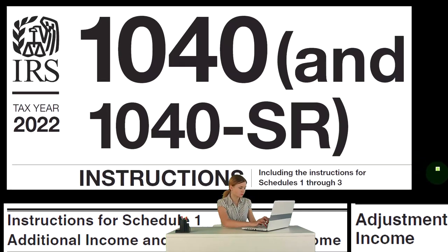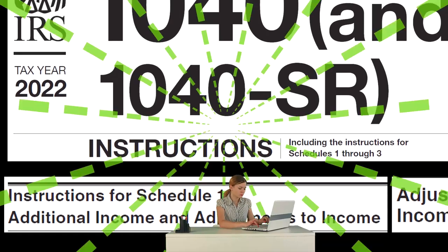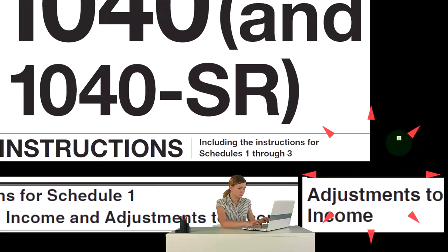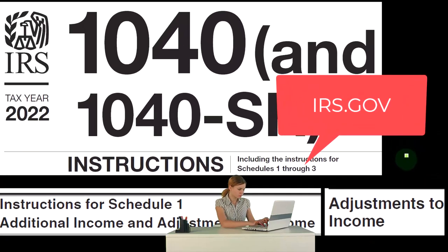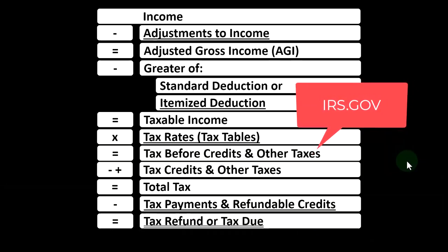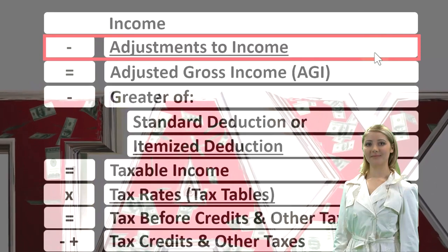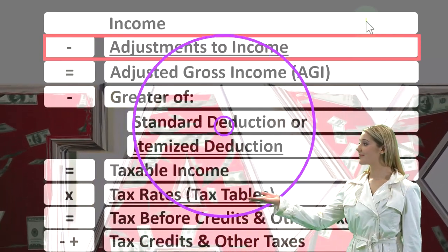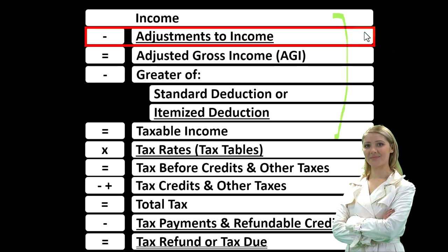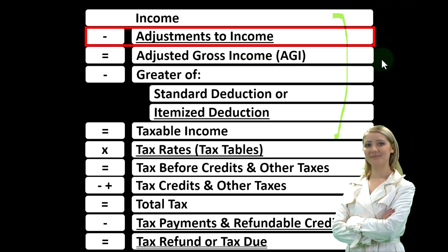Most of this information can be found in the Form 1040 Instructions for Tax Year 2022, specifically the Instructions for Schedule 1 — Additional Income and Adjustments to Income, which you can find at irs.gov. Looking at our income tax formula, we're focused once again on the adjustments to income. The first half of the formula is essentially an income statement, where income minus deductions gets us to taxable income.